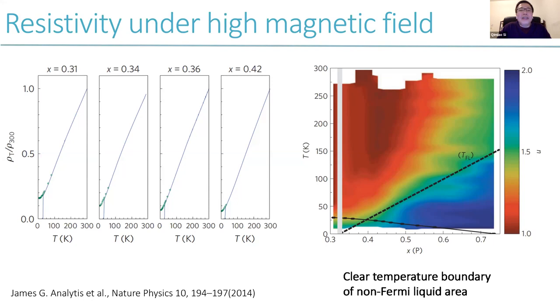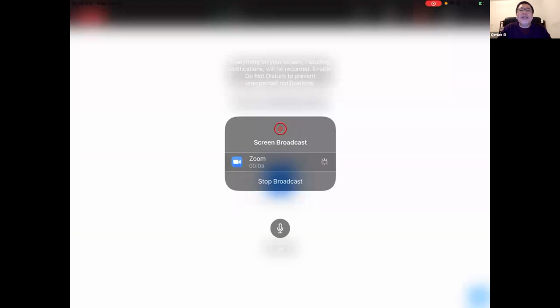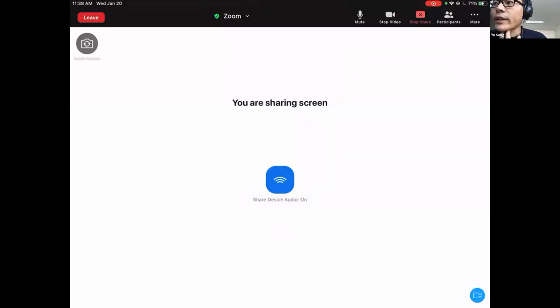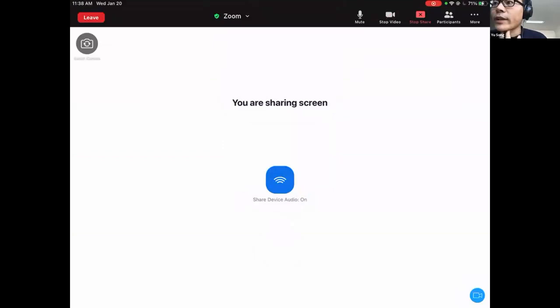So I think if there's no further questions or comments, let's thank Ding once again for a nice talk. And let's move on to the next talk, which will be given by Yu. I understand Yu is under transition from UC Berkeley to Cornell University. All right. Are you seeing my screen? Thank you. We see your screen. Yes. So are you seeing the slides right now? Yes, we do. Okay. Great. Wonderful. All right. So maybe let me just introduce you further.